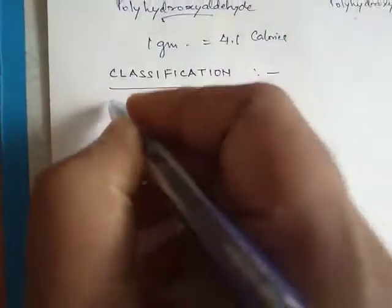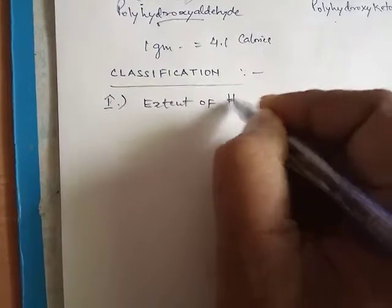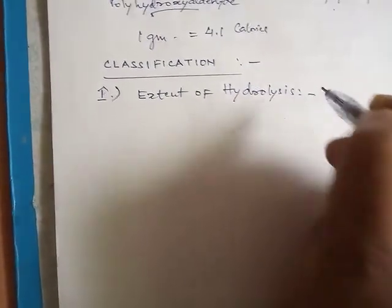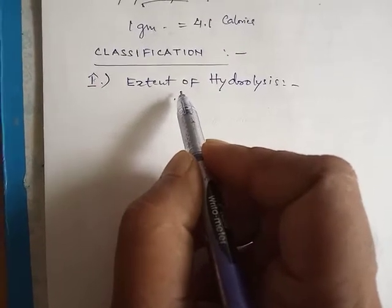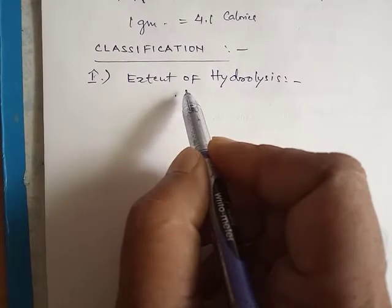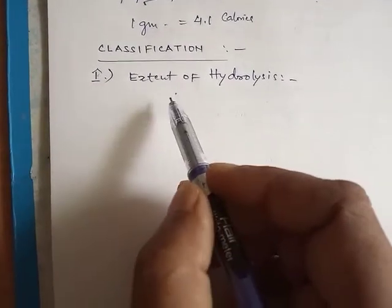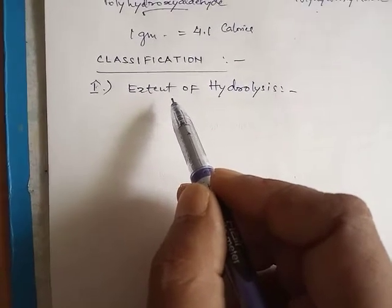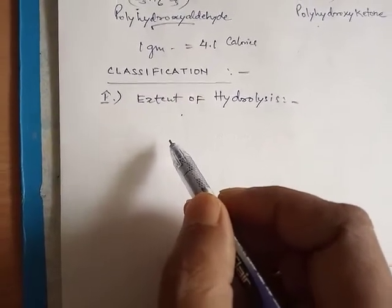Now we will discuss the classification of carbohydrates. Carbohydrates can be classified into various categories. The first classification is based on the extent of hydrolysis, meaning carbohydrates are divided into three major groups depending on the number of simple sugars present in the molecule, or in other words, the number of simple sugar molecules produced on hydrolysis. The molecules obtained may be of the same or different sugars.